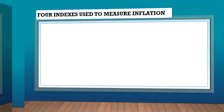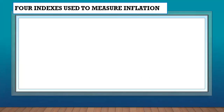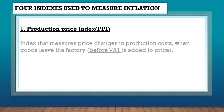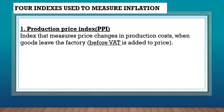There are two indexes used to measure inflation. The first one is the Production Price Index, PPI. PPI measures price changes in production costs when goods leave the factory — in other words, how much does it cost to produce goods this year versus next year? That gives us inflation according to the PPI.